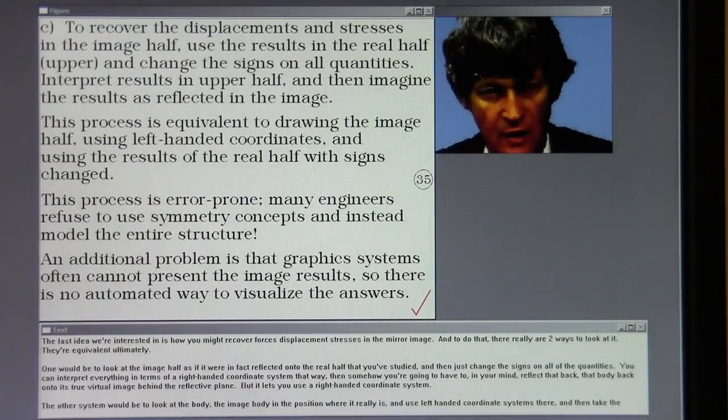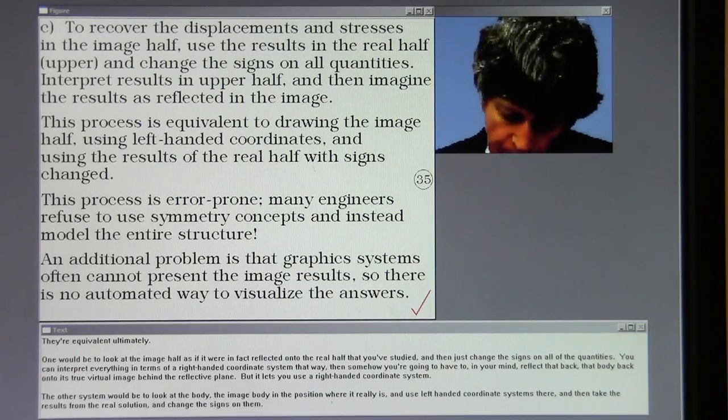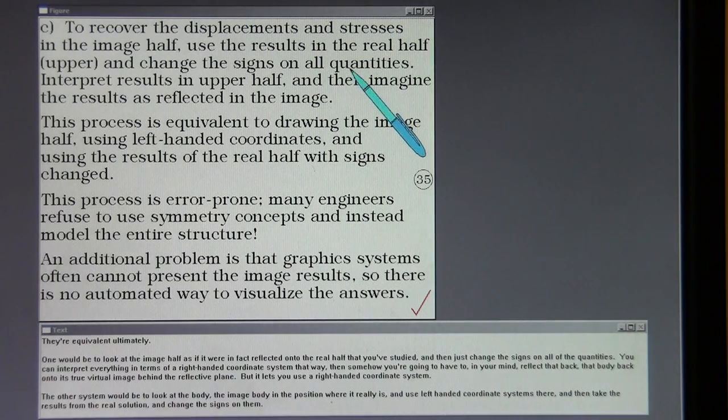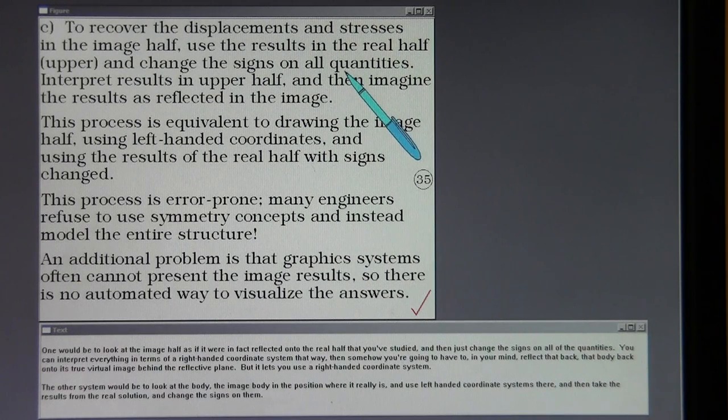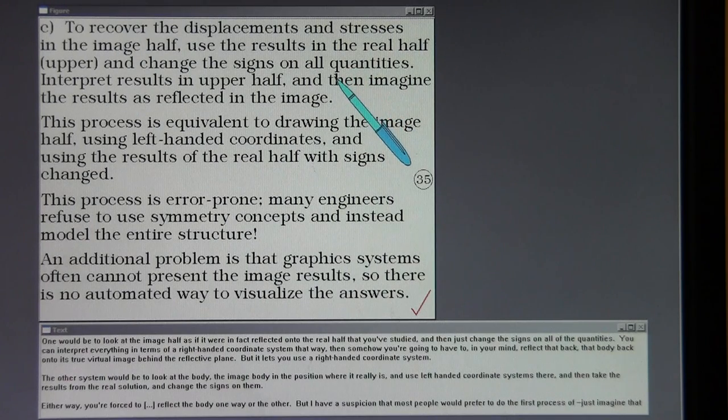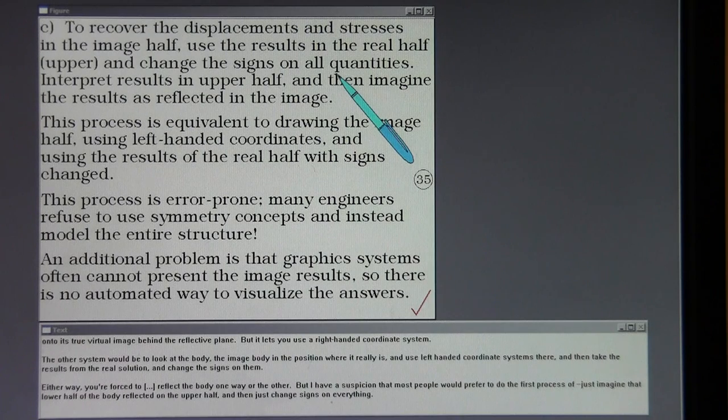The last idea we're interested in is how you might recover forces, displacements, stresses in the mirror image. And to do that, there really are two ways to look at it. They're equivalent ultimately. One would be to look at the image half as if it were in fact reflected onto the real half that you've studied and then just change the signs on all of the quantities. You can interpret everything in terms of a right-handed coordinate system that way. Then somehow you're going to have to, in your mind, reflect that body back onto its true virtual image behind the reflective plane. But it lets you use a right-handed coordinate system.